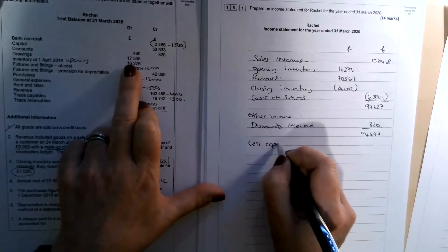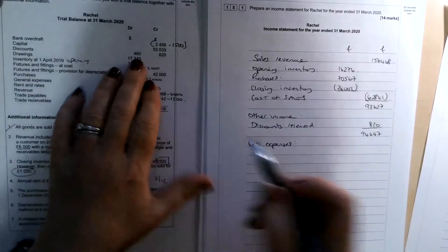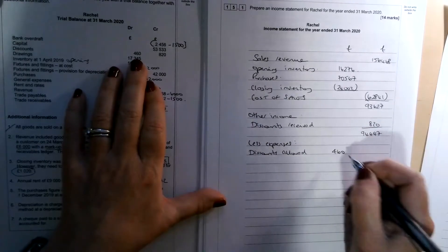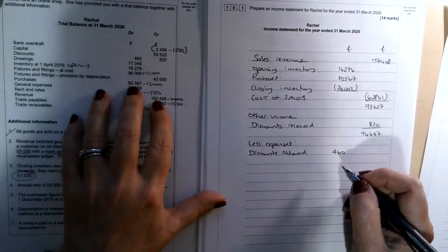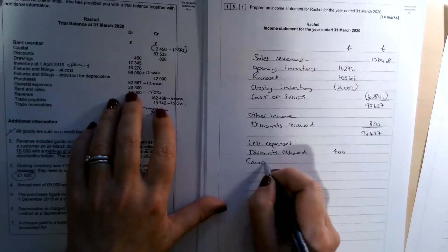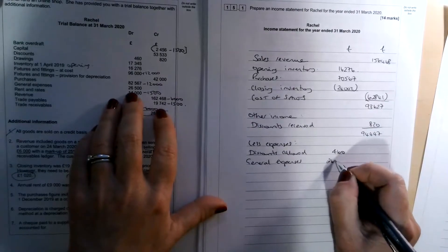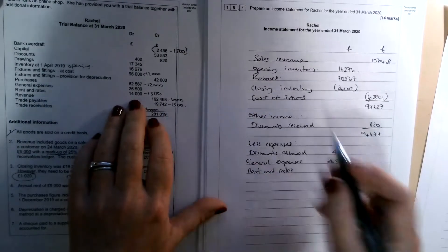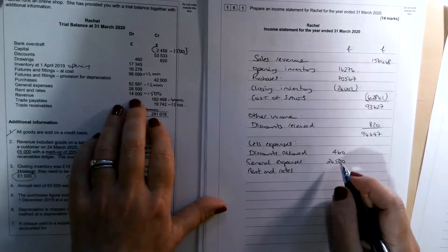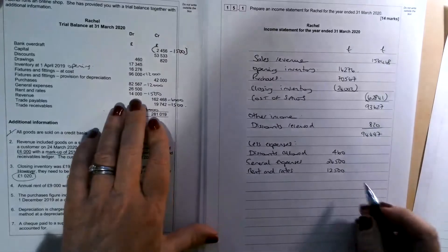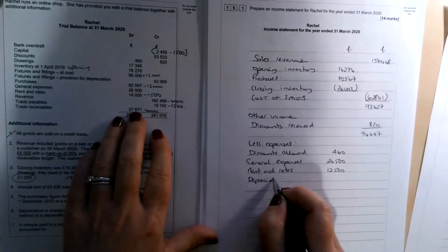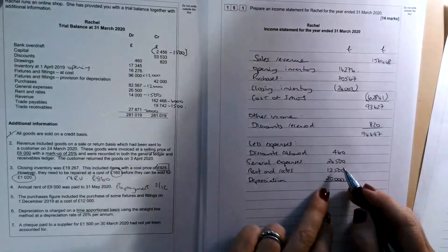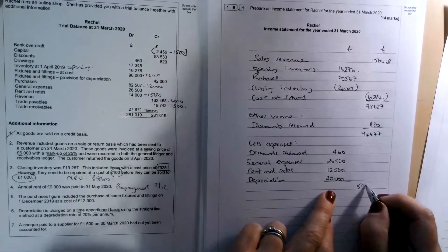Discounts received, £820. If we add those two together, we get 94,447. That doesn't get a title. Then we can take off the expenses. So let's start at the top. Let's not forget, we've got discounts allowed to our customers there, £460. What else have we got here? We've dealt with general expenses. Nothing changed with the general expenses. So £26,500 going in there. Rent and rates. We had £14,000 minus the £1,500 prepaid. So that's £12,500. And then we've got our depreciation, which was £20,000. So if we add those four figures up together, we get £59,460.